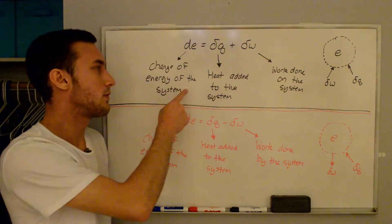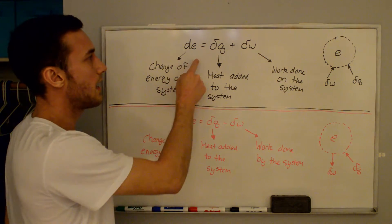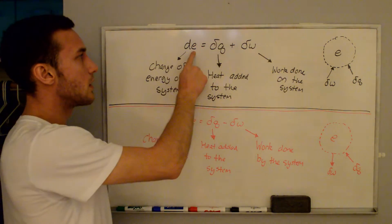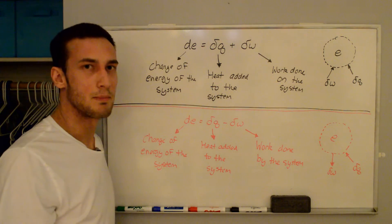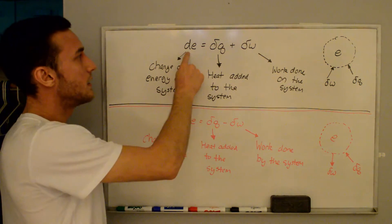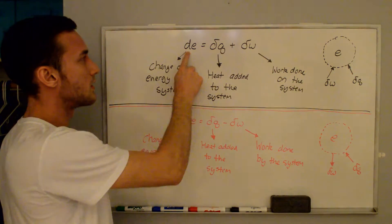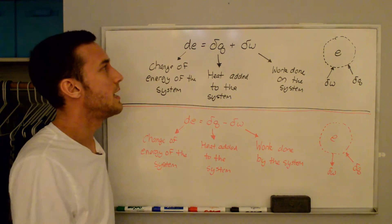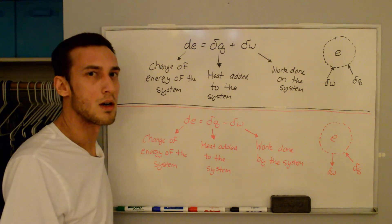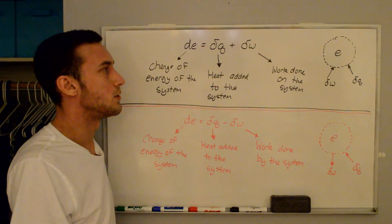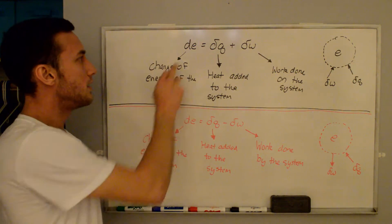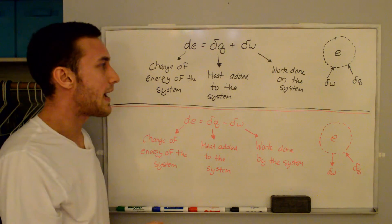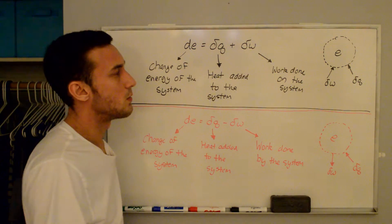On the top in black I've defined the first form and on the bottom in red I've defined the second form. Looking at the top one first, we have dE equal to δQ plus δW — lowercase letters because we're on a per-mass basis for intensive variables. The normal D indicates an exact differential, while the δ symbols indicate inexact differentials whose values depend on the path taken. dE is the change in energy of the system, δQ is the heat added to the system, and δW is the work done on the system.